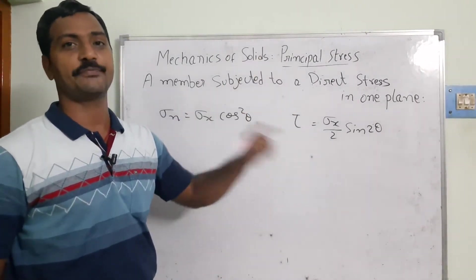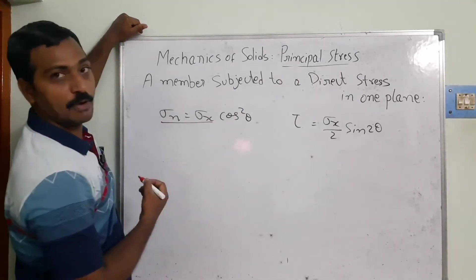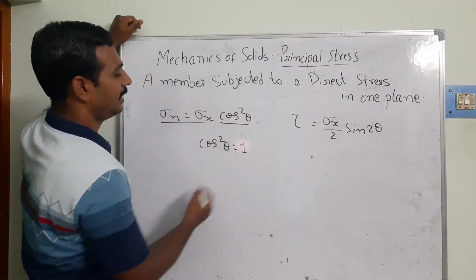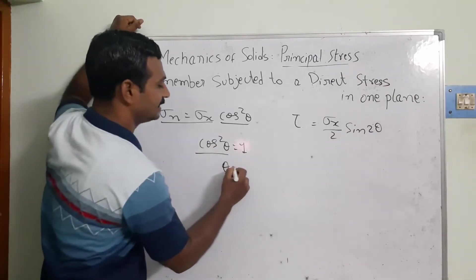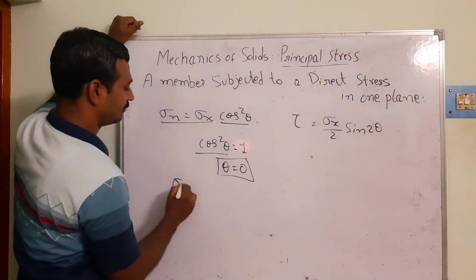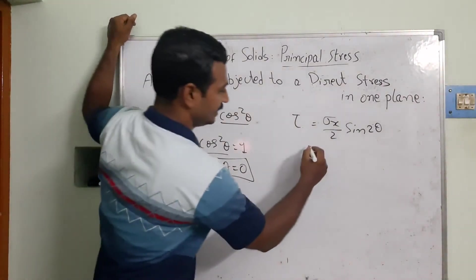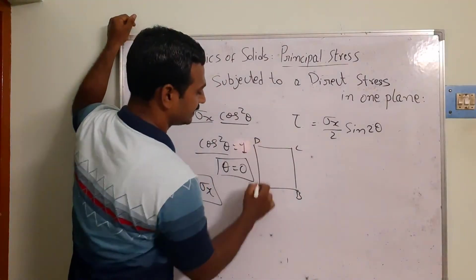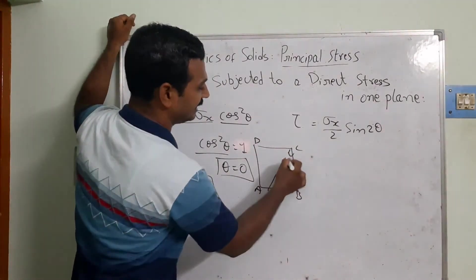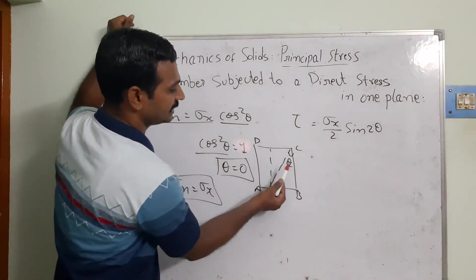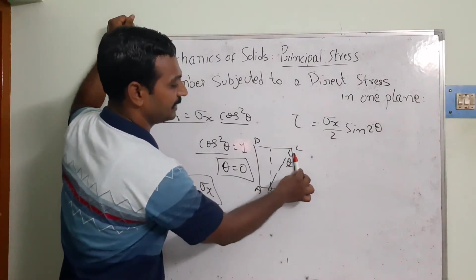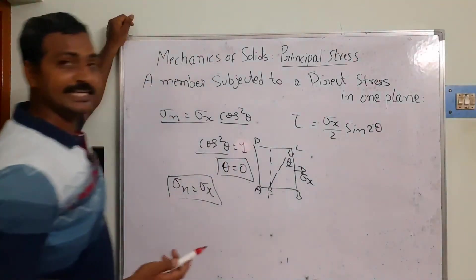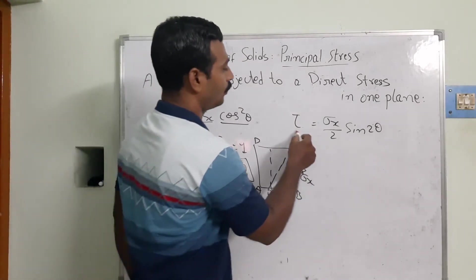Sigma N is maximum when cos²θ equals 1, which occurs when cos θ = 1, i.e., when theta = 0 degrees. At theta = 0, the FC plane becomes the BC plane (or EF), and Sigma N = Sigma X. So the normal stresses at theta = 0 are directly equal to Sigma X — the normal stresses are maximum on the BC plane.